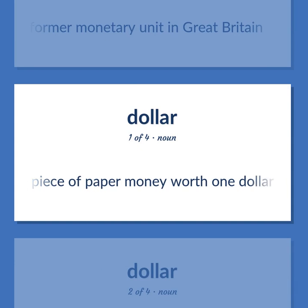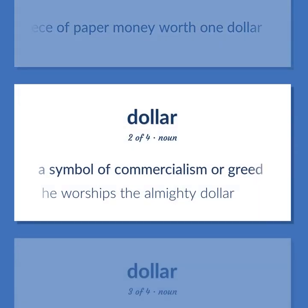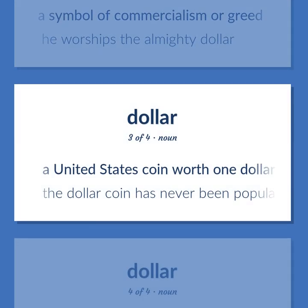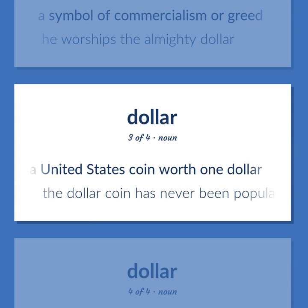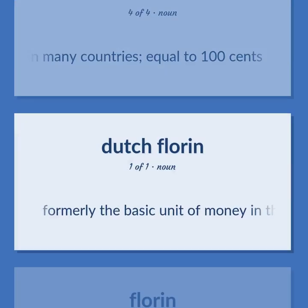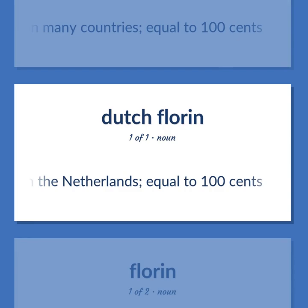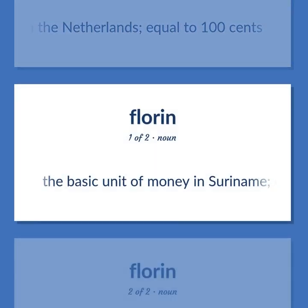A piece of paper money worth $1. A symbol of commercialism or greed — he worships the almighty dollar. A United States coin worth $1 — the dollar coin has never been popular in the United States. The basic monetary unit in many countries, equal to 100 cents. Formerly the basic unit of money in the Netherlands, equal to 100 cents. The basic unit of money in Suriname, equal to 100 cents.